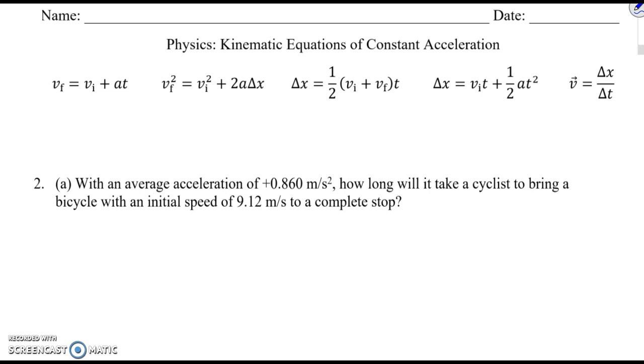So let's say this is our problem. This is number two from your homework. There are five quantities that are going to appear in these problems: the initial velocity, the final velocity, the acceleration, the displacement, and the time.